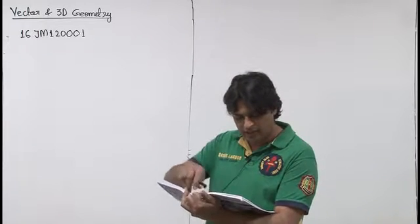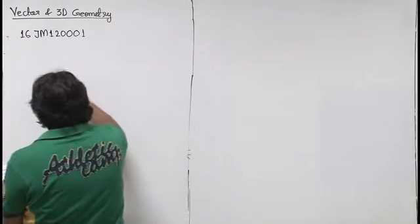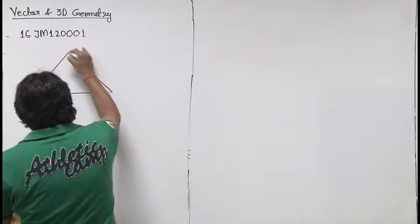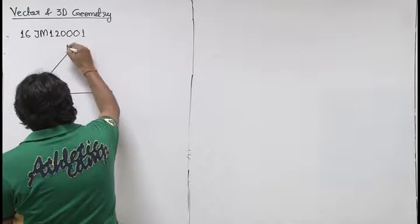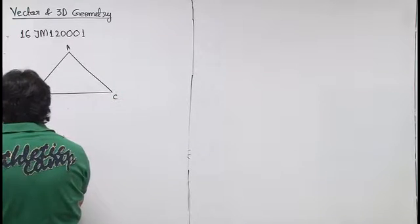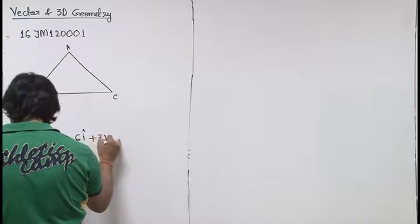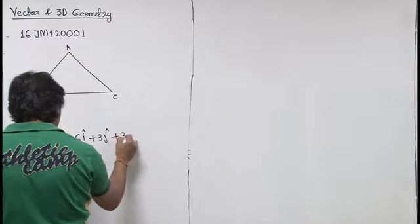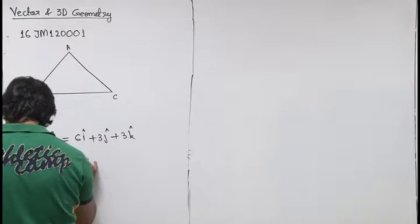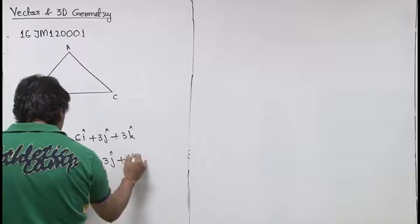In this question, we are given that in triangle ABC, vector AB and AC are given. Vector AB is 6i cap plus 3j cap plus 3k cap, and vector AC is 3i cap minus 3j cap plus 6k cap.